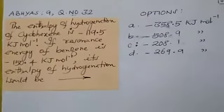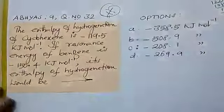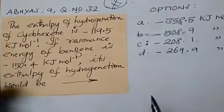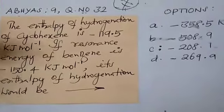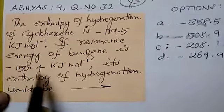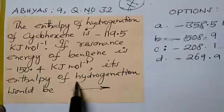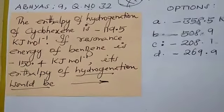The enthalpy of hydrogenation of cyclohexene is -119.5 kilojoule per mole, exothermic. If resonance energy of benzene is -150.4 kilojoule, the enthalpy of hydrogenation of benzene would be what? First you should know the concept.